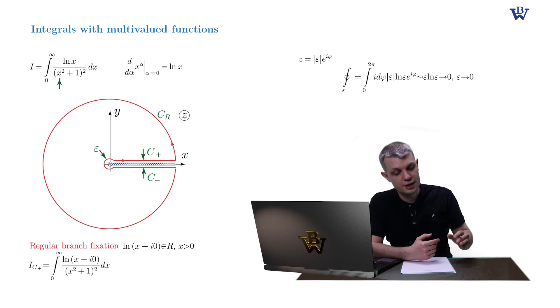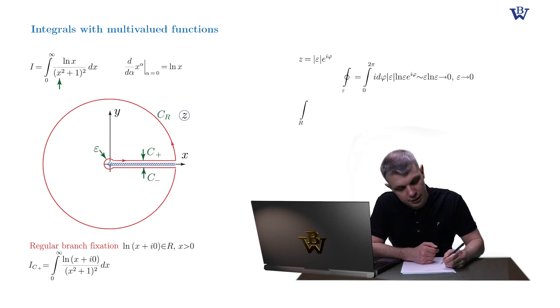Now, the large circular integral, cr. Well, I leave it up to you to prove that the whole integral behaves as log of r divided by r cubed at large values of r. So the whole thing again tends to zero as r tends to infinity.